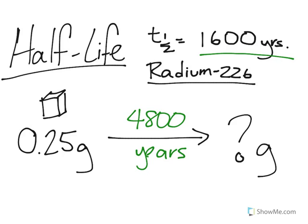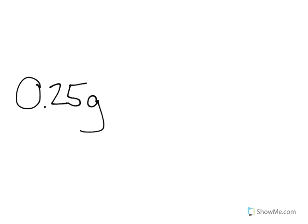So let's go on to the next page and take a look at how to actually solve this without having to use logs or exponential functions. So if we have 0.25 grams and we want to know how many grams it's going to be at the end, we just count how many times we have to divide this by 2 until we get to 4,800 years. So let's go ahead and divide this by 2. If we divide this by 2, one half-life has occurred, so 1,600 years have passed.